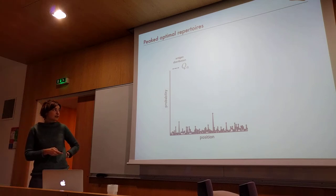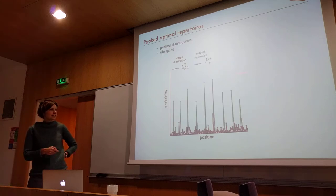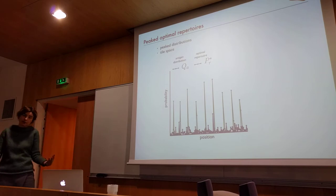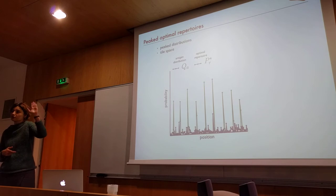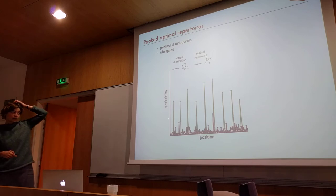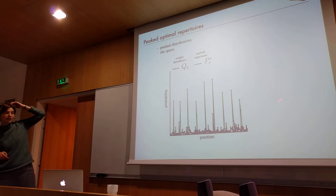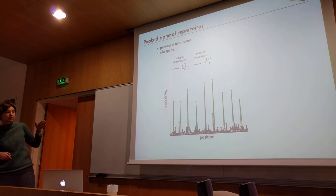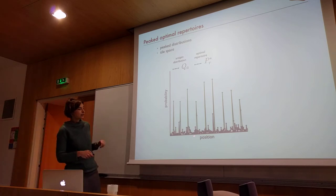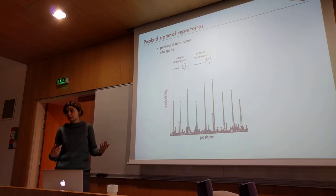We numerically optimized the antigen distribution and found that the optimal repertoire is made of discrete receptors that tile space. It's very peaked — not everywhere — but receptors are placed at certain positions, and then cross-reactivity acts like a little envelope covering everybody nearby. If you have a receptor here, cross-reactivity means that everyone around you will be covered.